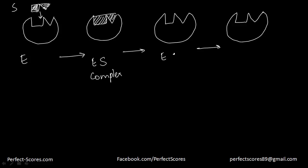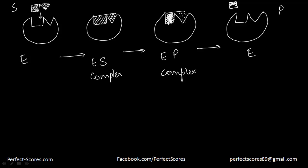The next step shows the enzyme-product complex, where the product has formed. Finally, the enzyme and the product get separated, leaving the free enzyme again. This kind of model is known as the lock and key model.